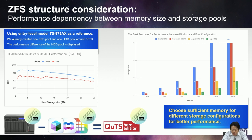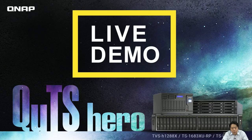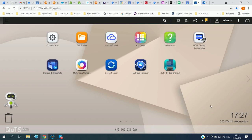If you create a pool larger than these recommendations, your NAS will still operate reliably, but performance may decrease. As a reference, we use the entry-level ZFS model TS-973AX to show the performance difference between 8GB (the minimum requirement) and 60GB RAM. With one SSD pool and one HDD pool at around 35TB, the performance difference of the hard drive pool is significant between those two memory configurations.